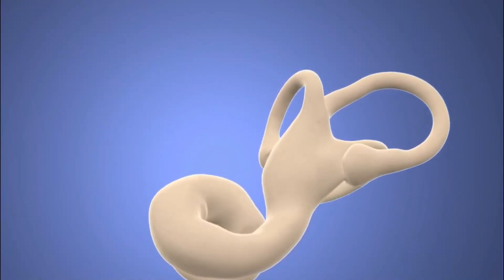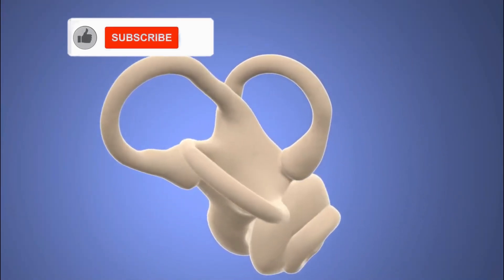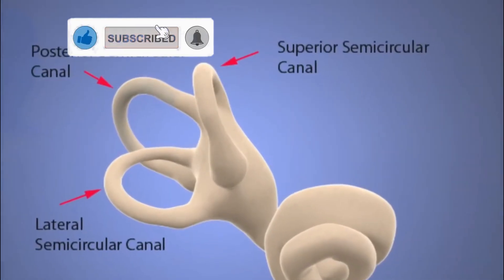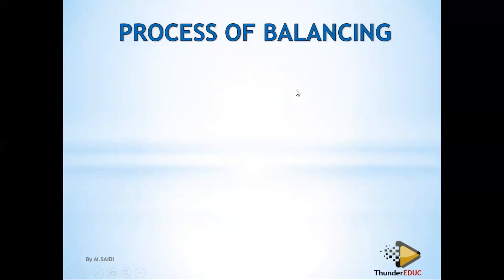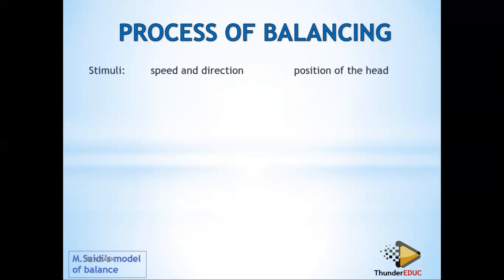Welcome back to our class. Don't forget to subscribe if it's your first time visiting our channel. In human body balance, you need to know some concepts about balance. Number one, the stimulus — there is speed and there is direction. Speed and direction is one stimulus. Then there is position of the head, which is another stimulus. You need to know the receptor, which is the cristae and the maculae.